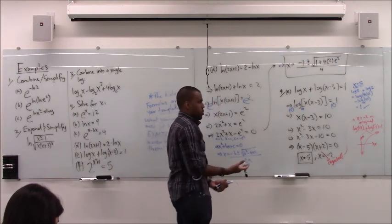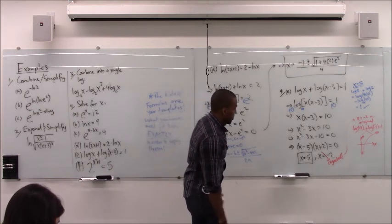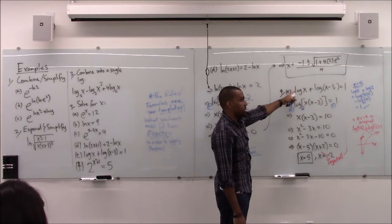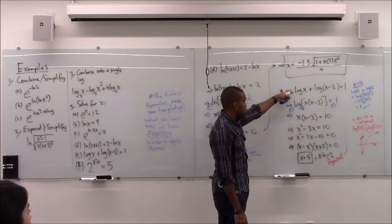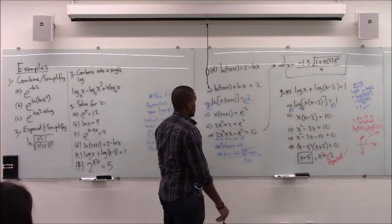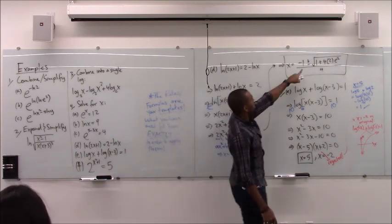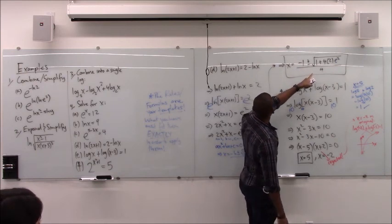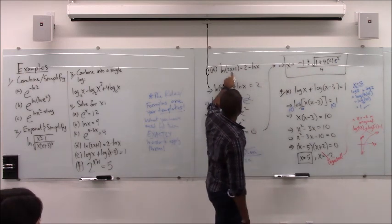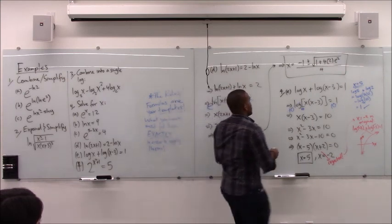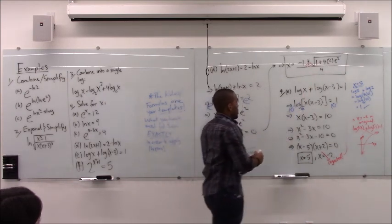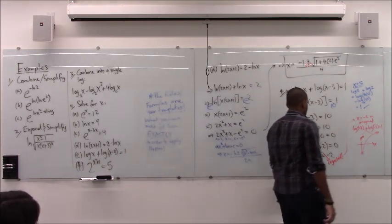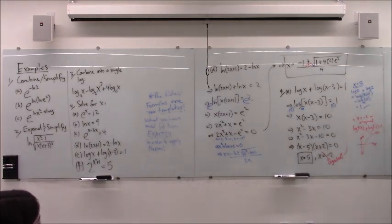Exponentials work everywhere — the domain is all real numbers. But for logarithms, the domain isn't all real numbers, so once you find input values you must check whether they actually make sense in the original problem. Whenever you solve a logarithmic equation, always verify that your answers work in the original — the negative sign can give you a negative number inside a log, which must be rejected.